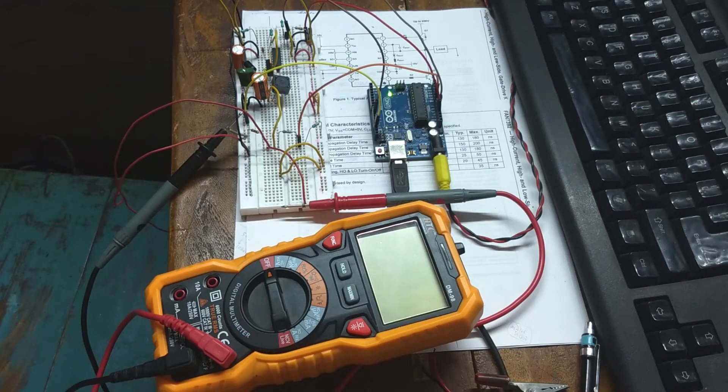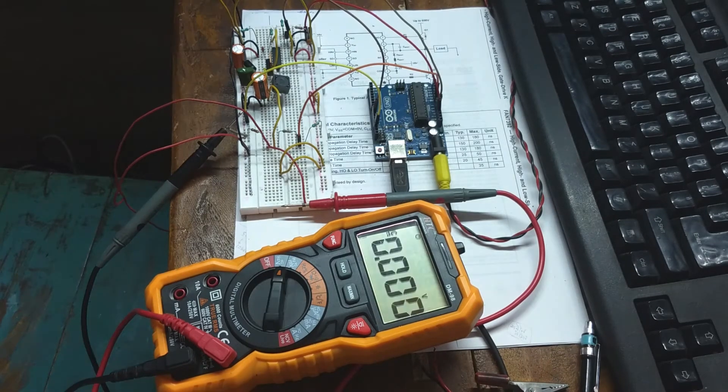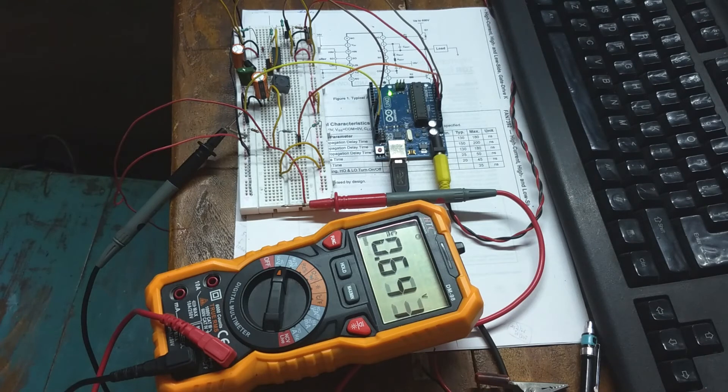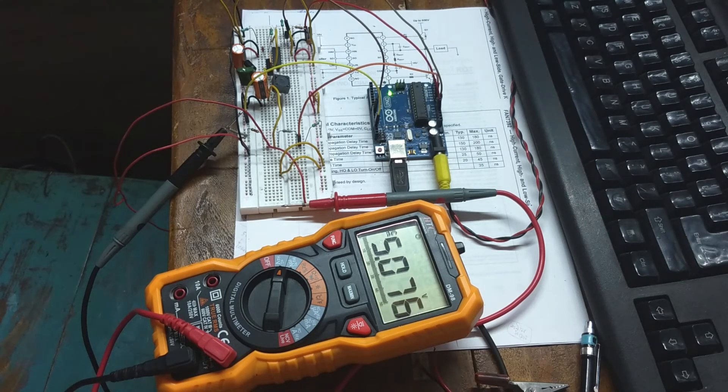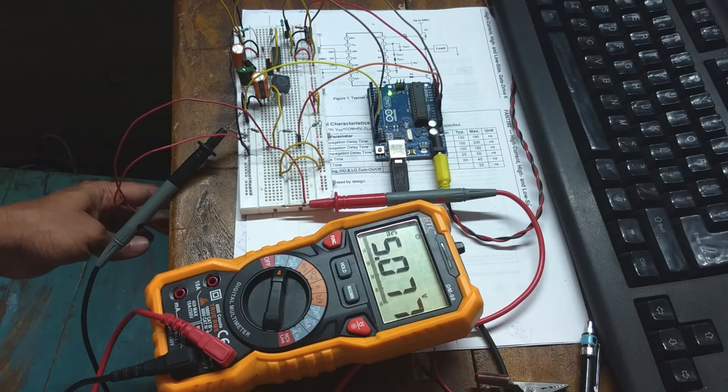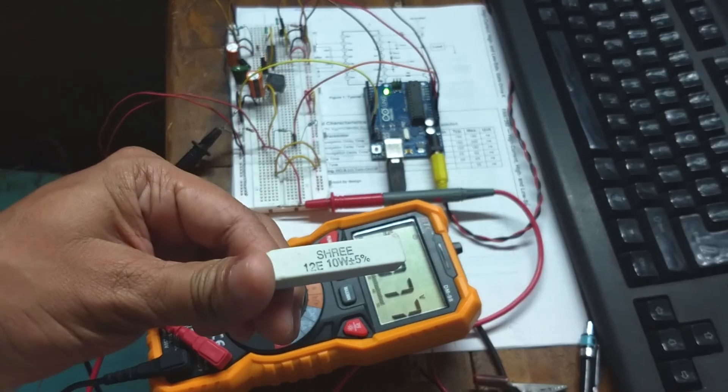After making connections between Arduino pins and breadboard, I uploaded the code, turned on the input voltage which is a 12 volt battery in this case. As you see, the output voltage is 5.08 volt which is very close to what I expected. This is without any load.